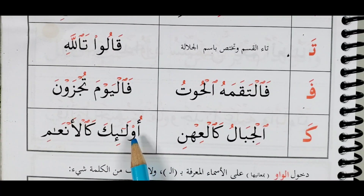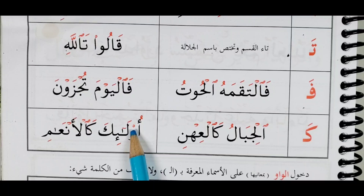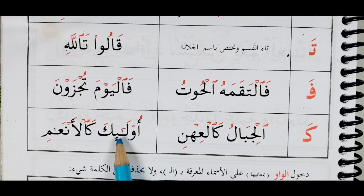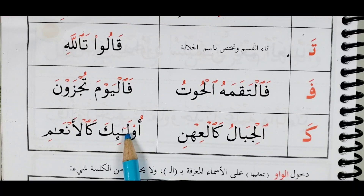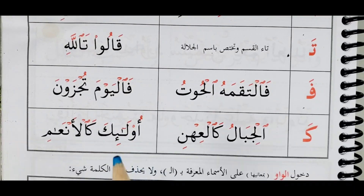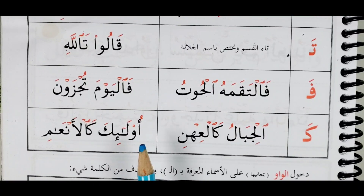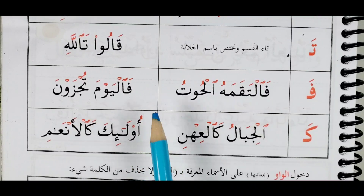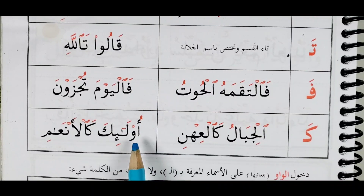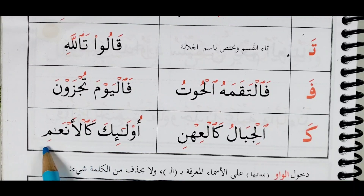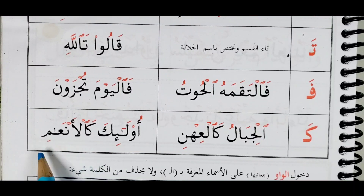Then we have أولئك — you see the circle on top, just imagine it is not there. Read from the أُ to the لا — don't say أُ separately, just أولئك. The لام has a small madda so you make it long, but you ignore the written symbol here in recitation. So: أولئك — كالأنعام.